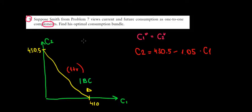Now how can we solve this? Well by substitution. We'll just substitute consumption one into consumption two since they are the same. So we would have now consumption in the first period equals to 430.5 minus 1.05 times consumption one. Now we have consumption one in both terms so we can add them.